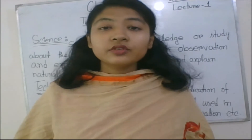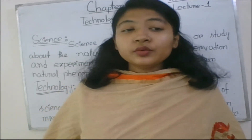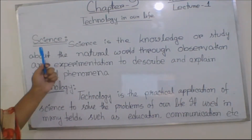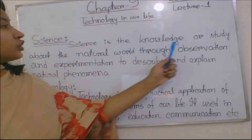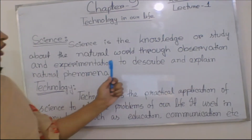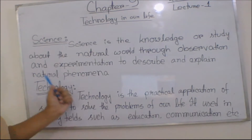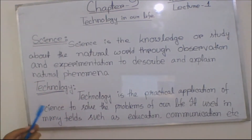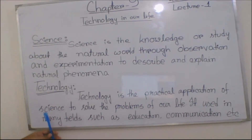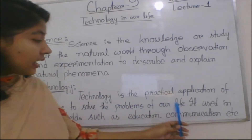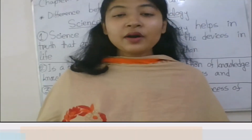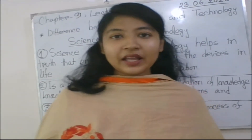Here we have a formal definition of science and technology. Science is the knowledge or study about the natural world. Technology is the practical application of science to solve the problems of our life. It is used in many fields such as education and communication.